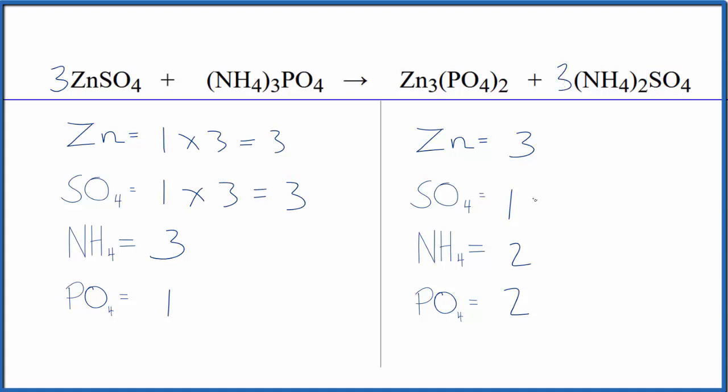Then we have two times the one, so two ammonium ions times three. Two times three is six, six ammonium ions. If we put a two here, we have one times three, that's three times two. Three times two balances the ammonium ions.